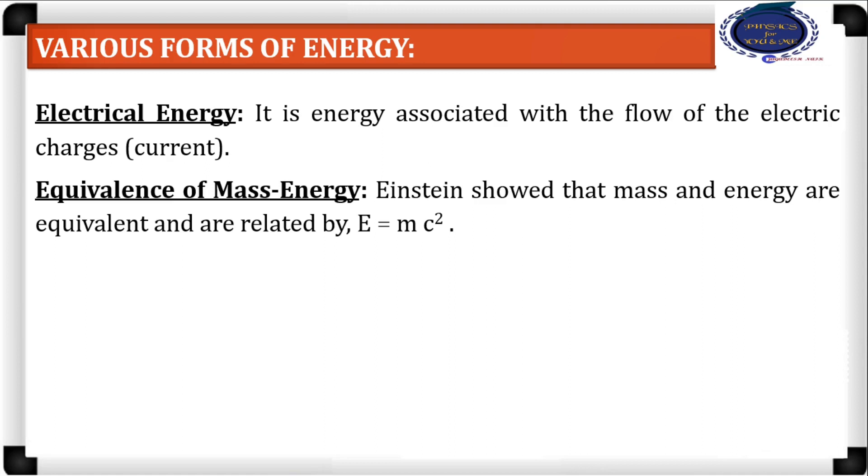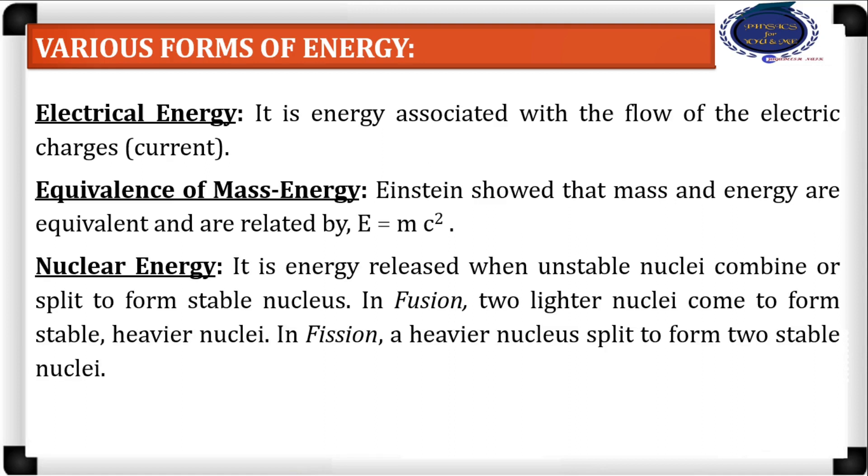Nuclear energy is released when unstable nuclei combine or split, nuclear fusion or fission, to form stable nucleus. In fusion, lighter nuclei come together to form heavier nuclei. In fission, heavier nuclei split to form two stable lighter nuclei. Apart from these, there are more energies like sound and light. These are all forms of energy.